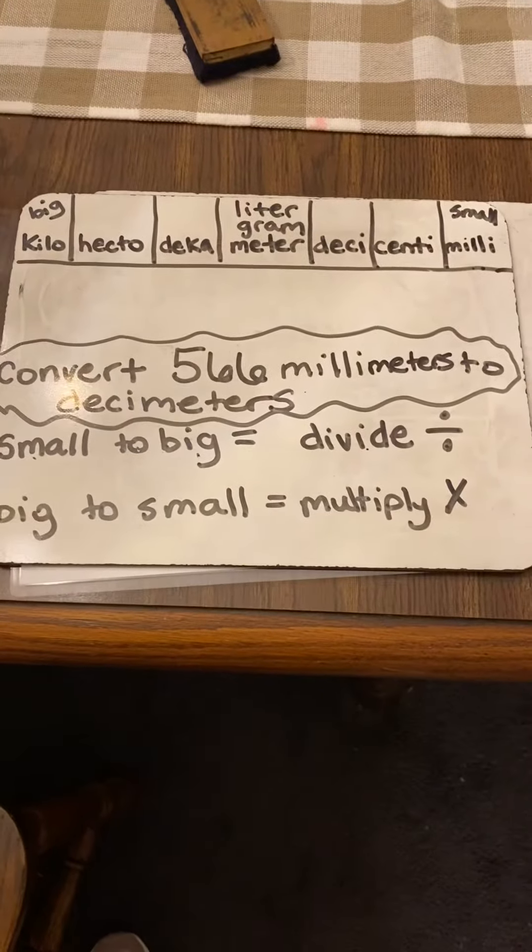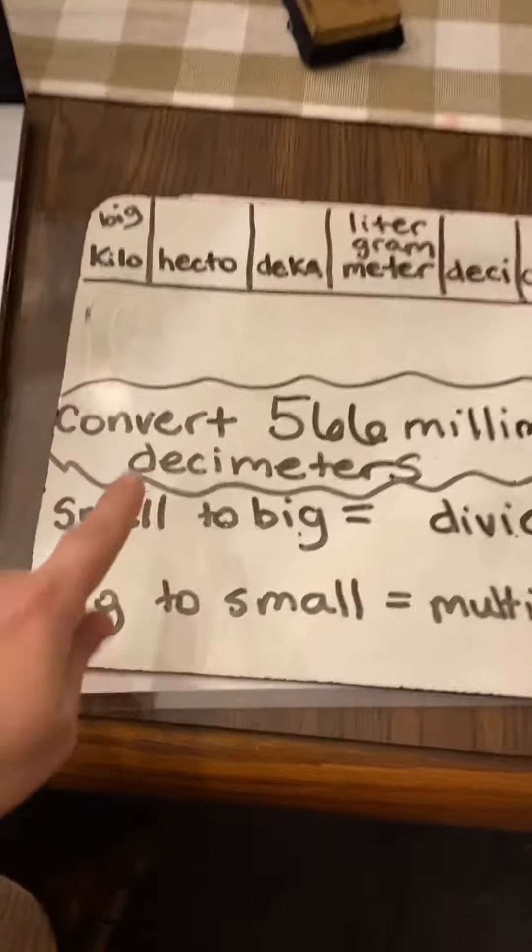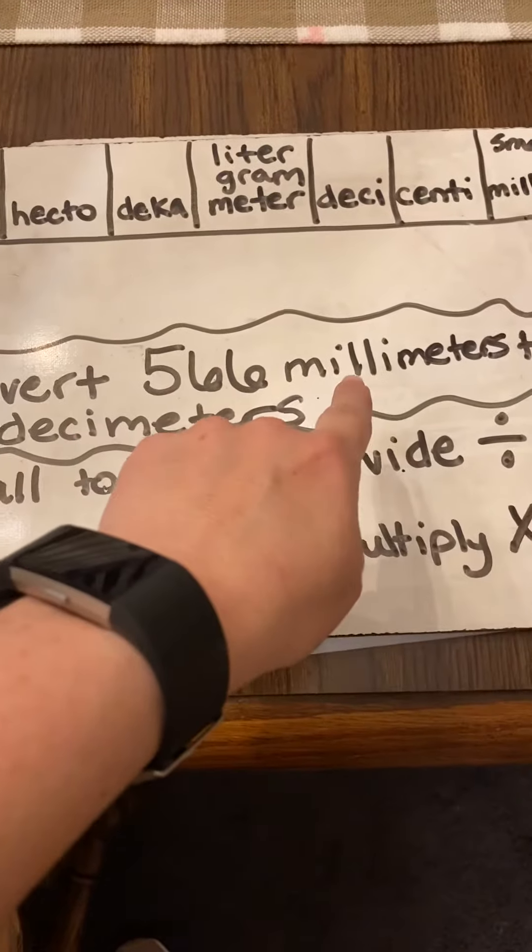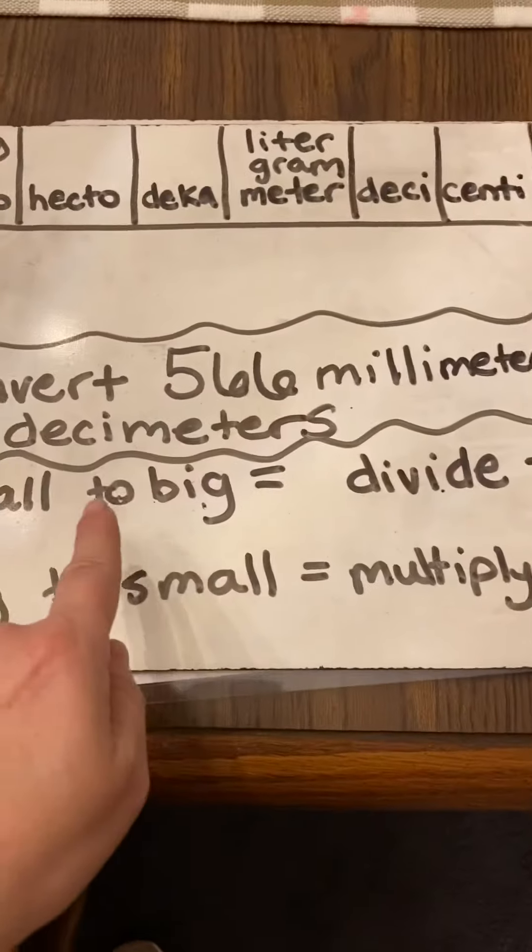Okay guys, here is our first conversion problem. We are converting 566 millimeters to decimeters.